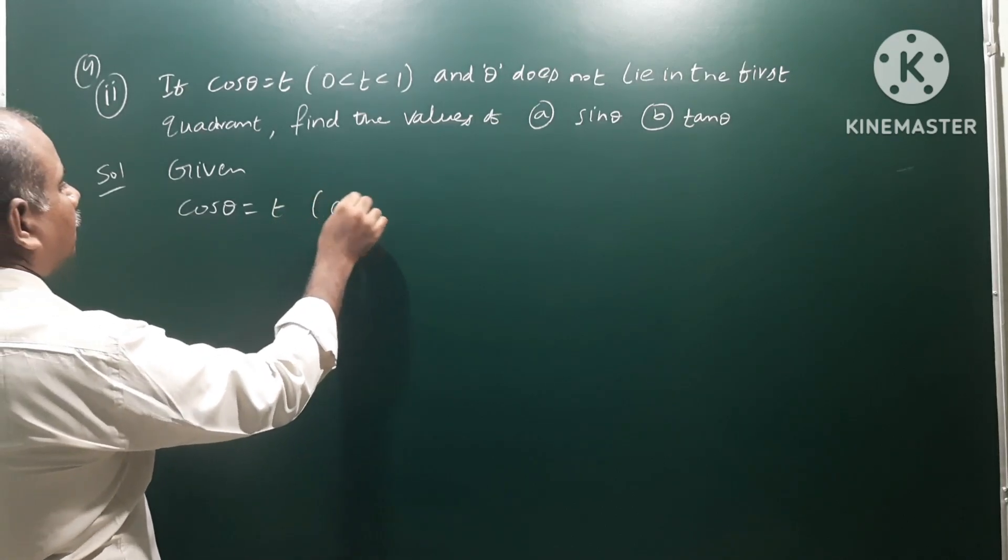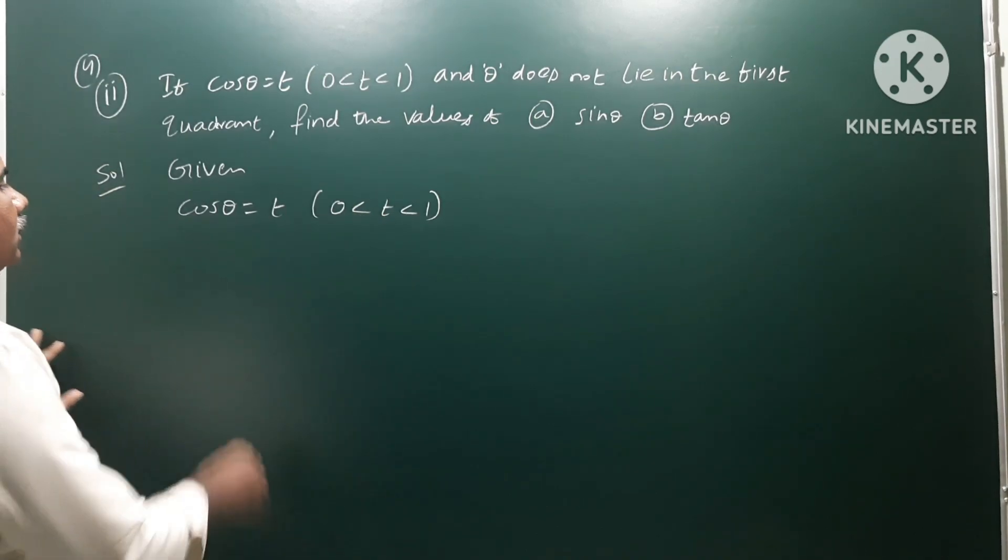Given: cos θ is equal to t, 0 less than t less than 1. So cos θ is greater than 0, which means positive value. Cos θ greater than 0, positive value, means θ is either in first quadrant or fourth quadrant.